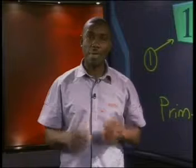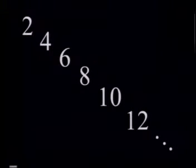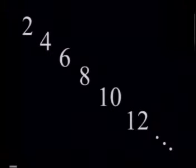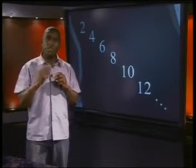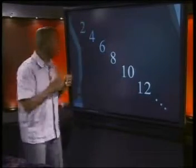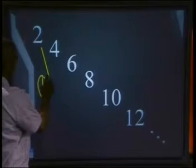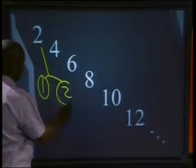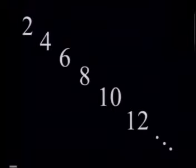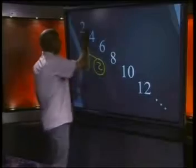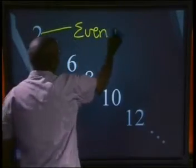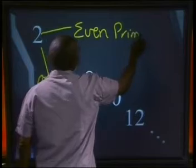How many even prime numbers are there? Look at the positive even numbers: 2, 4, 6, 8, 10, 12, and so on. The only prime number here is 2, since 2 is the only even number that has exactly 2 different factors — namely 1 and the number 2 itself. All other even numbers have 2 as a factor, so 2 is the only even prime number.